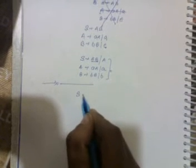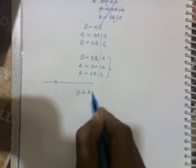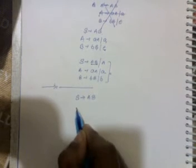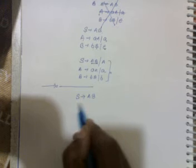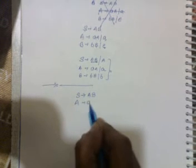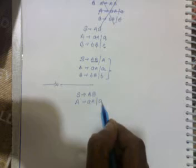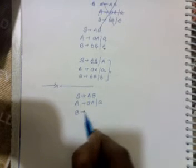Now we have to see how to eliminate epsilon production from the grammar. So we take an example of this grammar which is S produces AB, A produces aA oblique a